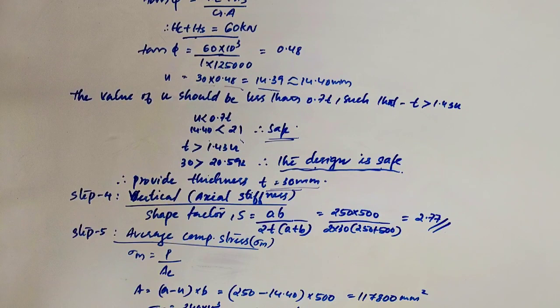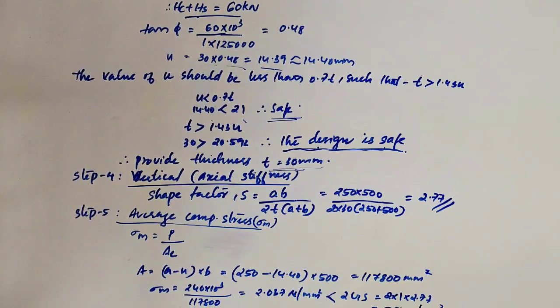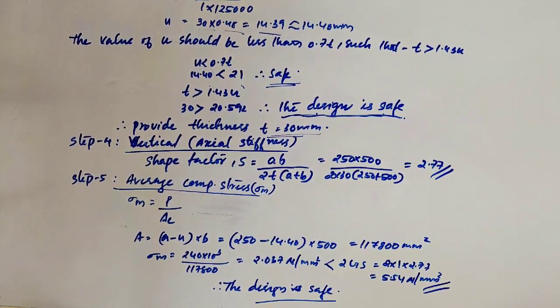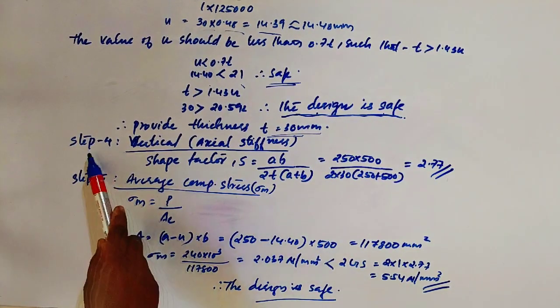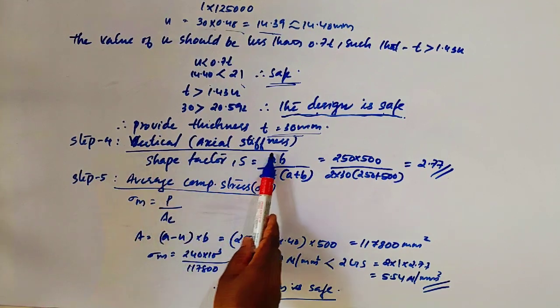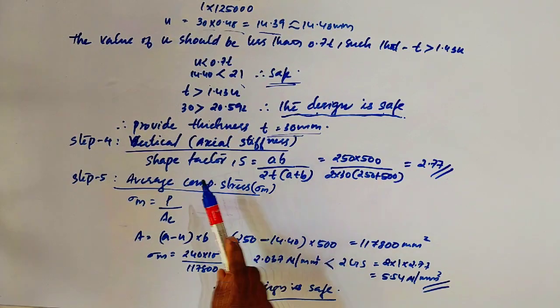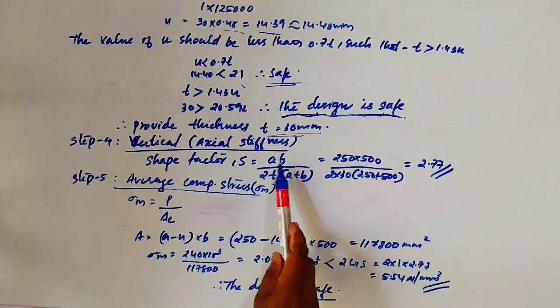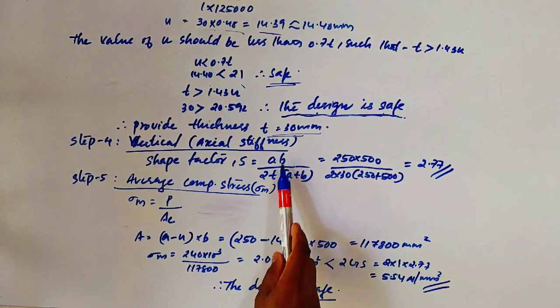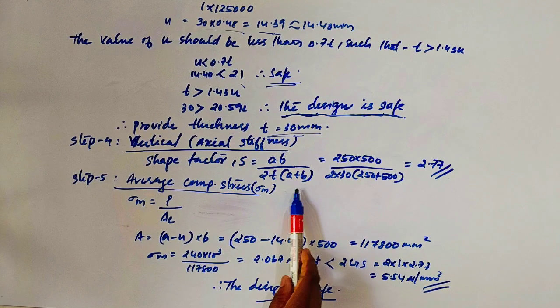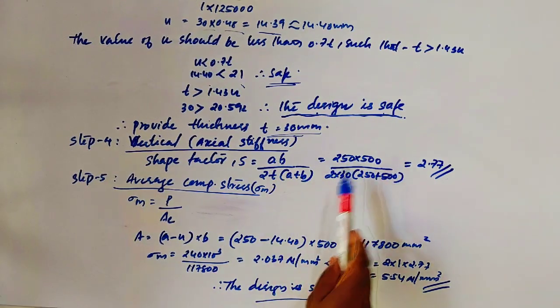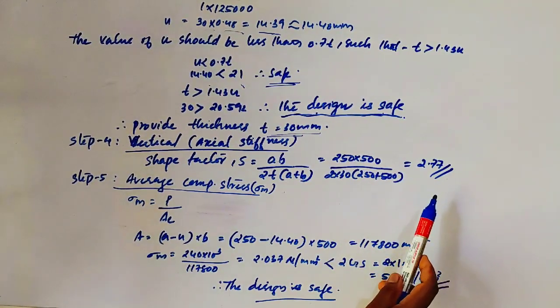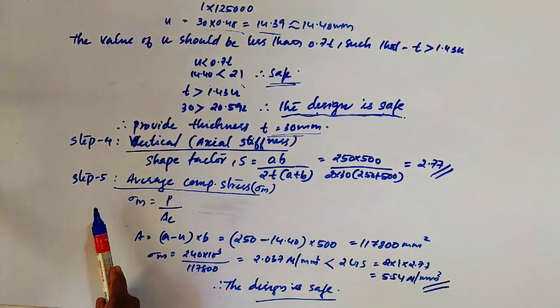Step 4: Calculation of vertical or axial stiffness. Shape factor S is equal to AB by 2T into A plus B. Substituting values: 250 into 500 divided by 2 into 30 into 250 plus 500, and the answer is 2.77. Shape factor S is equal to 2.77.